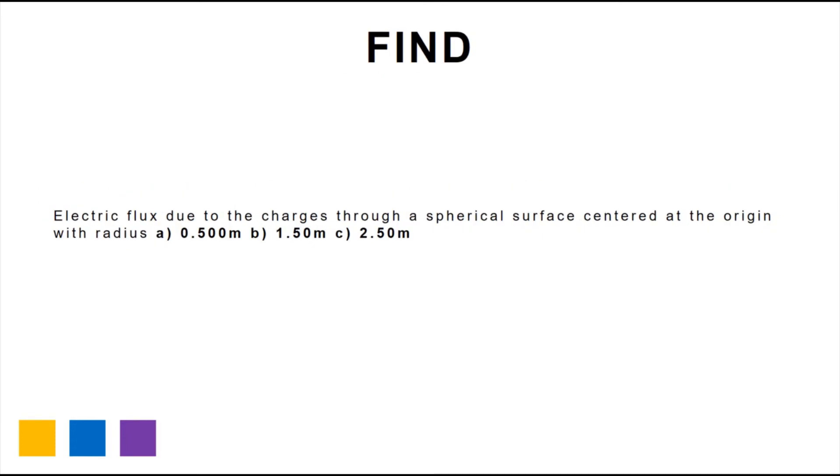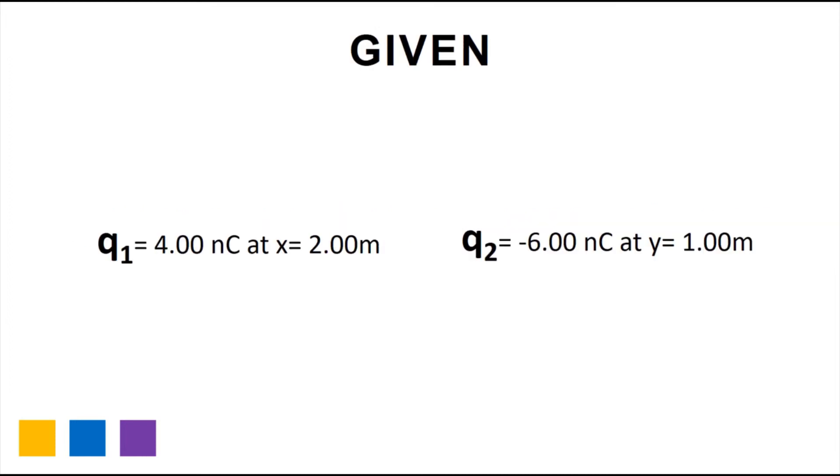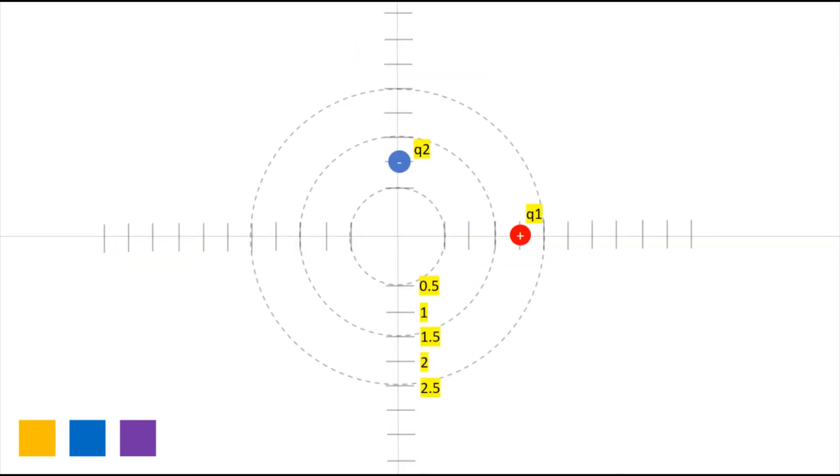What we should find here is the electric flux due to the charges through a spherical surface centered at the origin with radius A, 0.500 meters, B, 1.50 meters, and C, 2.50 meters. Given that Q1 is equal to 4 µC at x equals 2 meters, and given that Q2 is equal to negative 6 µC at y equals 1 meter.